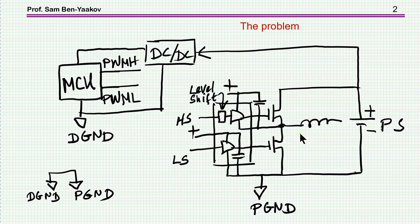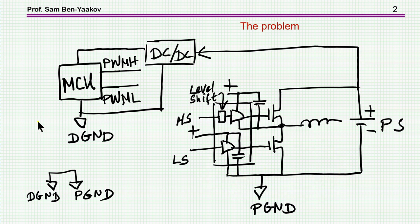Now in a system like that, especially if it's high power, we recognize what we call a digital ground and a power ground. The difference is that this power ground is the area where all the power transistors are connected. There are heavy currents passing through this plane — it's usually a PCB — and therefore there could be voltage drop along this plane. The potential between the digital and power ground is not zero.